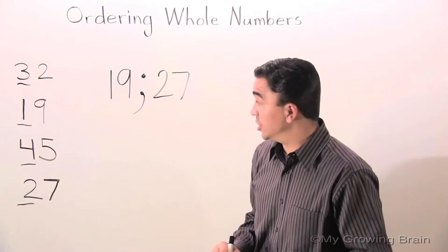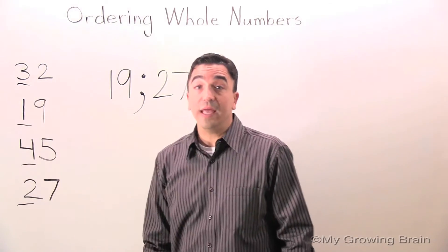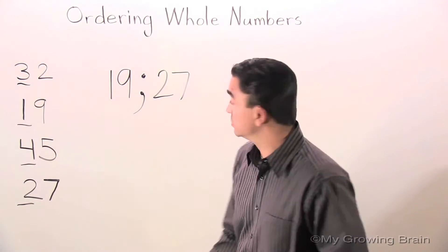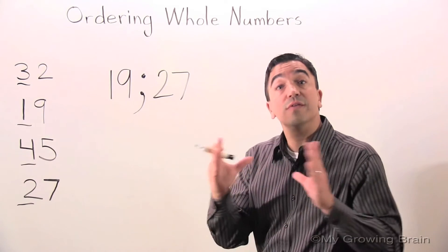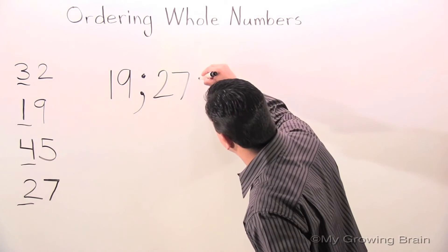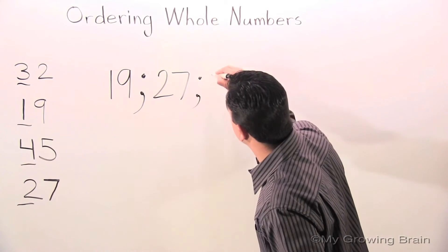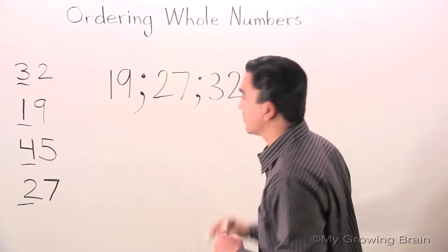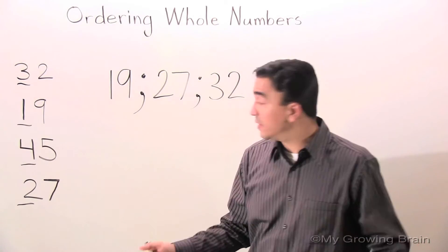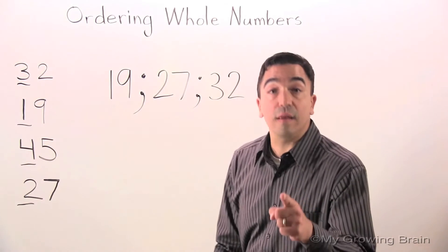The next digit is the digit three in the number 32. Again, a semicolon to separate the numbers. And last is the digit four in the number 45.